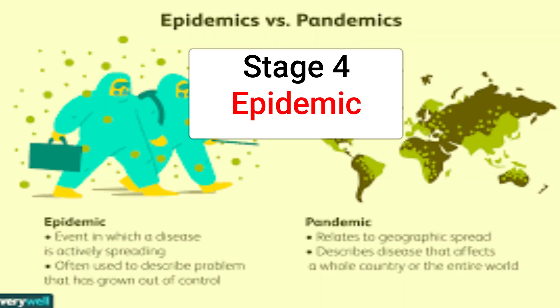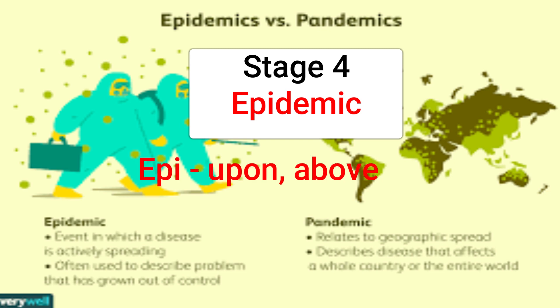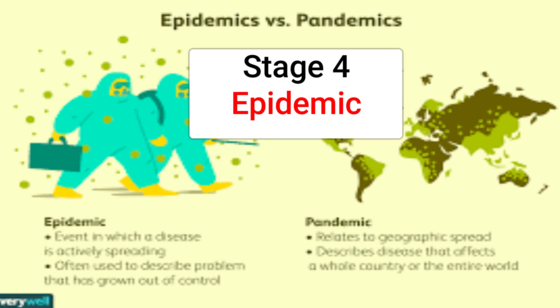Stage 4: Epidemic. This is the last stage and what the world saw China grapple with. From Greek, 'epi' means upon or above and 'demos' means people. So an epidemic is the rapid spread of disease to a large number of people in a given population within a short period of time. An epidemic may be restricted to one location; however, if it spreads to other countries or continents and affects a substantial number of people, it may be termed a pandemic.